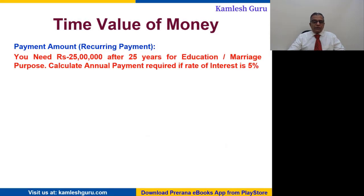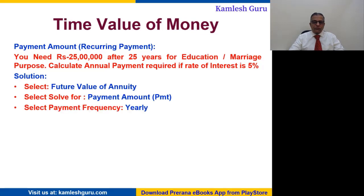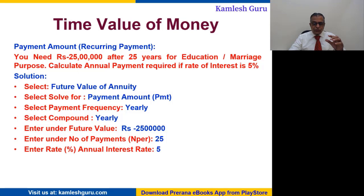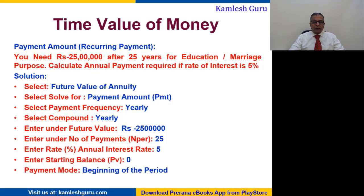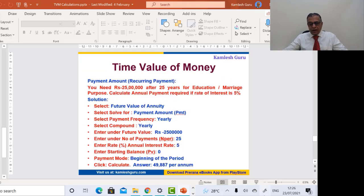Suppose you need 25 lakh rupees after 25 years for marriage or education. Calculate the annual payment required if the rate of interest from investment is five percent. Select future value of annuity, solve for payment amount. Payment frequency yearly, compound interest yearly. Future value is 25 lakhs, period is 25 years, assumed rate of interest five percent, starting balance zero, payment at the beginning of the period — so you have to invest about 50,000 rupees every year. If you invest 50,000 rupees every year for 25 years at five percent interest, it will become 25 lakhs.